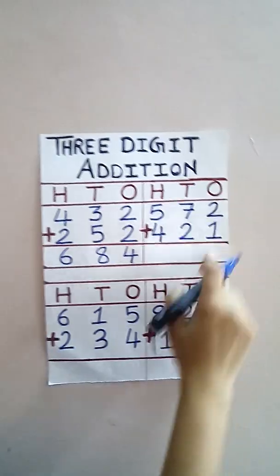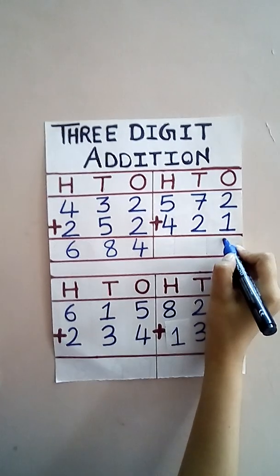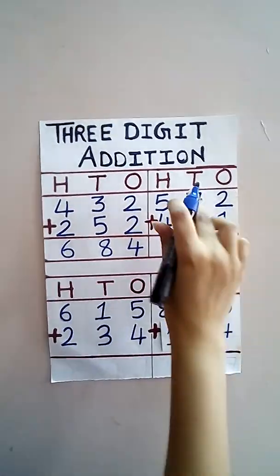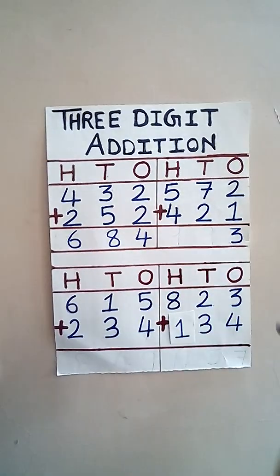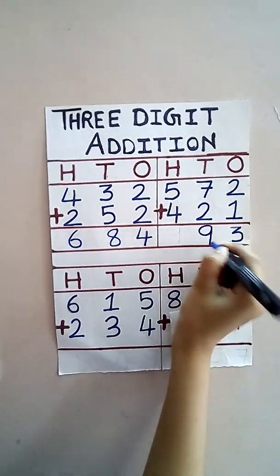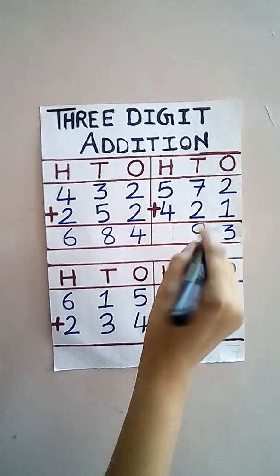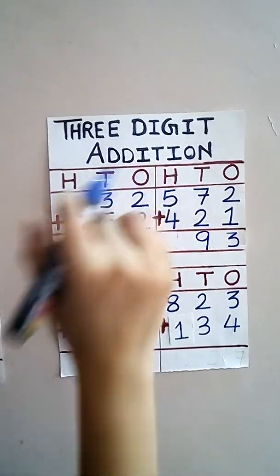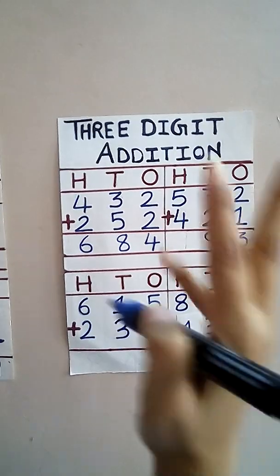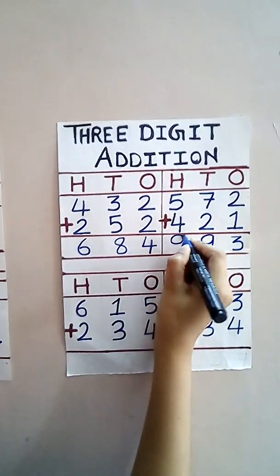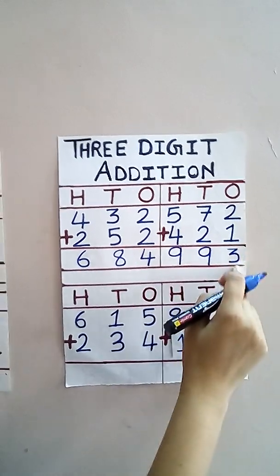Now this one. Start from ones. Two plus one — three. Then tens: seven in the mind — eight and nine. Means nine tens. Now it's time for hundreds. Five in the mind — six, seven, eight, nine. The answer will be nine hundred and ninety-three.